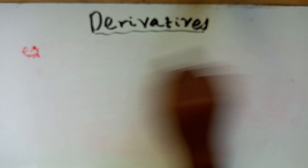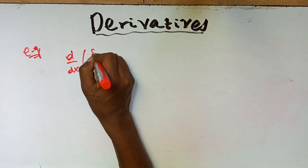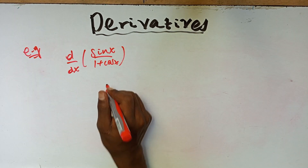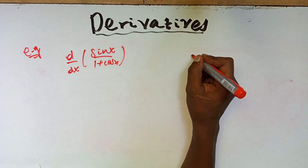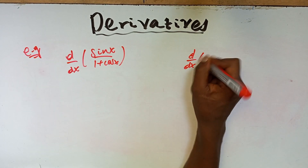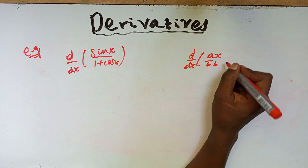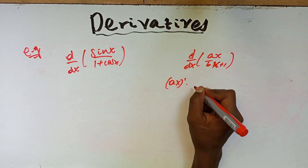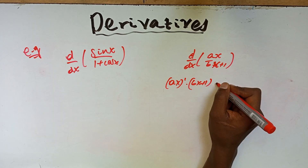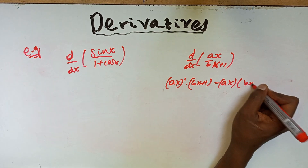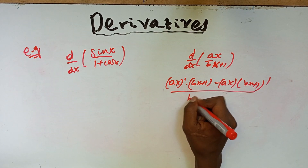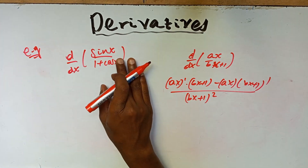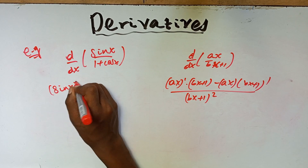Let's take another example: d/dx of sin x over (1 plus cos x). The derivative of this is calculated by the quotient rule. The quotient rule states: d/dx of a(x) over b(x) equals a(x) derivative times b(x) minus a(x) times b(x) derivative, all over b(x) squared.